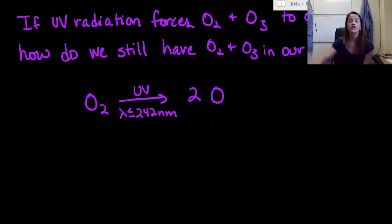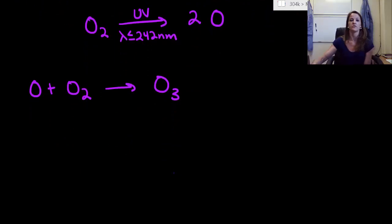these oxygens can do one of two things: interact with oxygen or with ozone. Let's look at the interaction with oxygen first. If monatomic oxygen interacts with diatomic oxygen, it comes together to create ozone, which is great because we need ozone in our atmosphere. Now this ozone